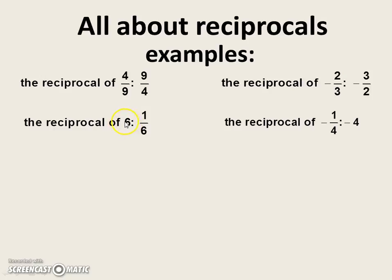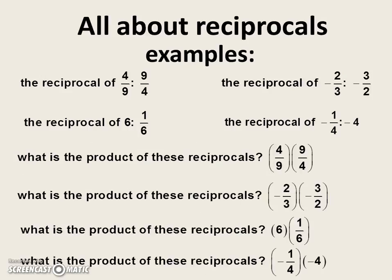Well, six can be written as a rational number or as a fraction. The way we do that is putting six over one, or six divided by one, because six divided by one is still six. When we flip it upside down, we get one-sixth. That's how we get a reciprocal of six, or any whole number.